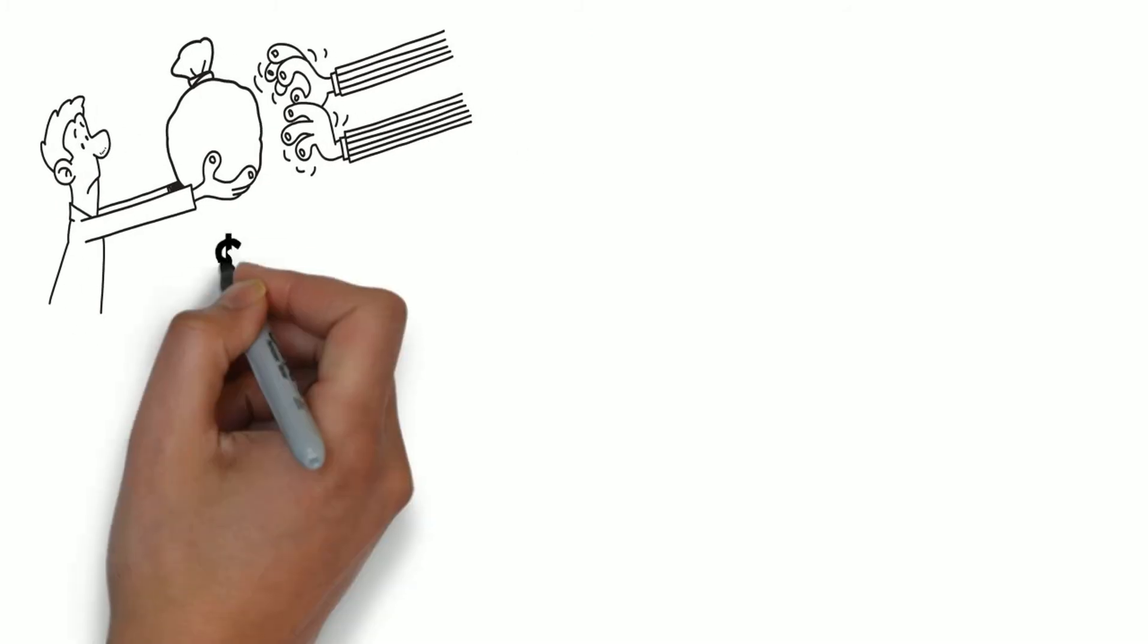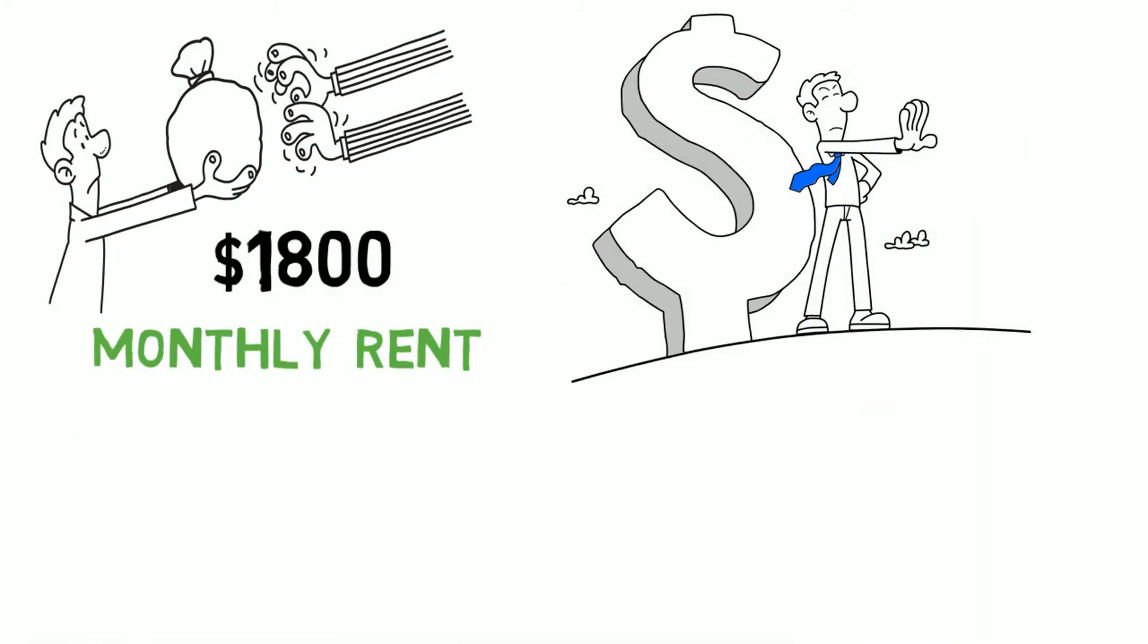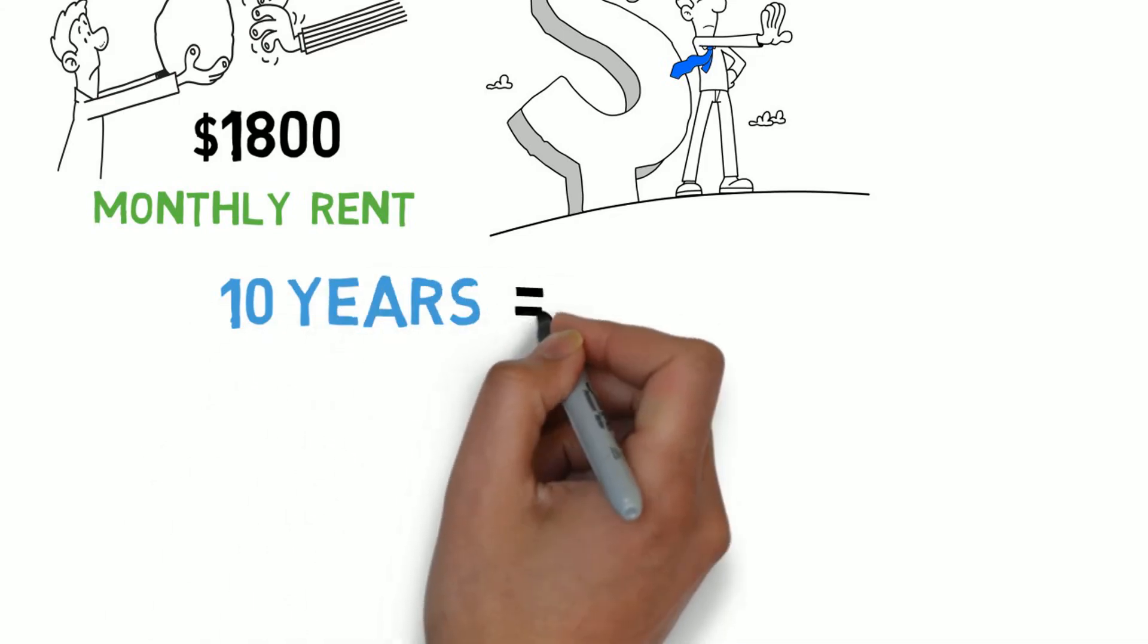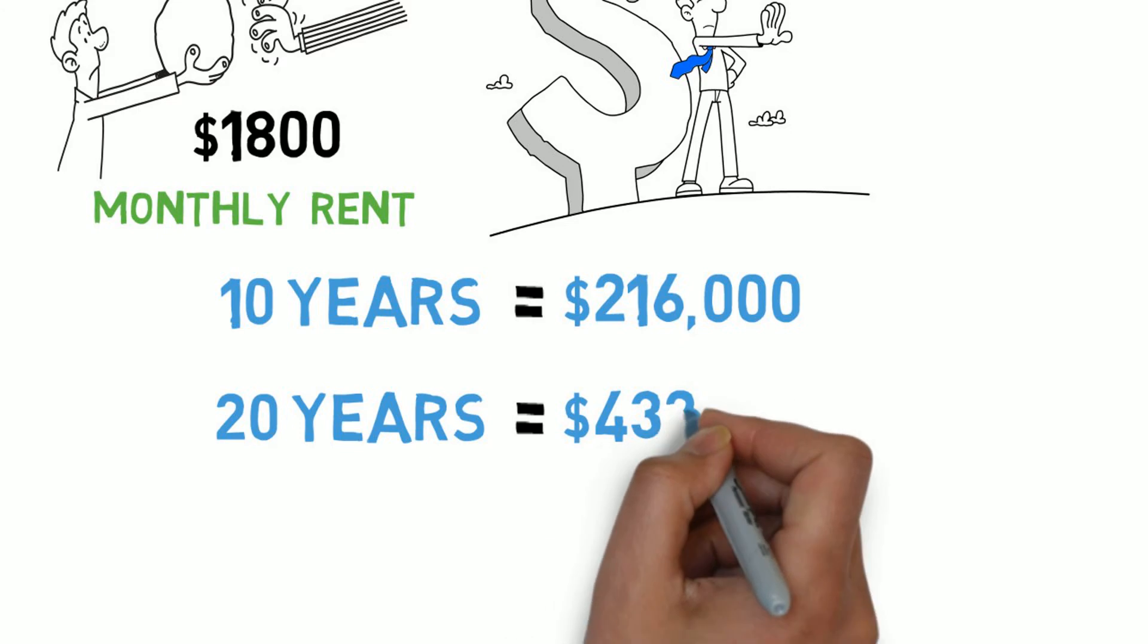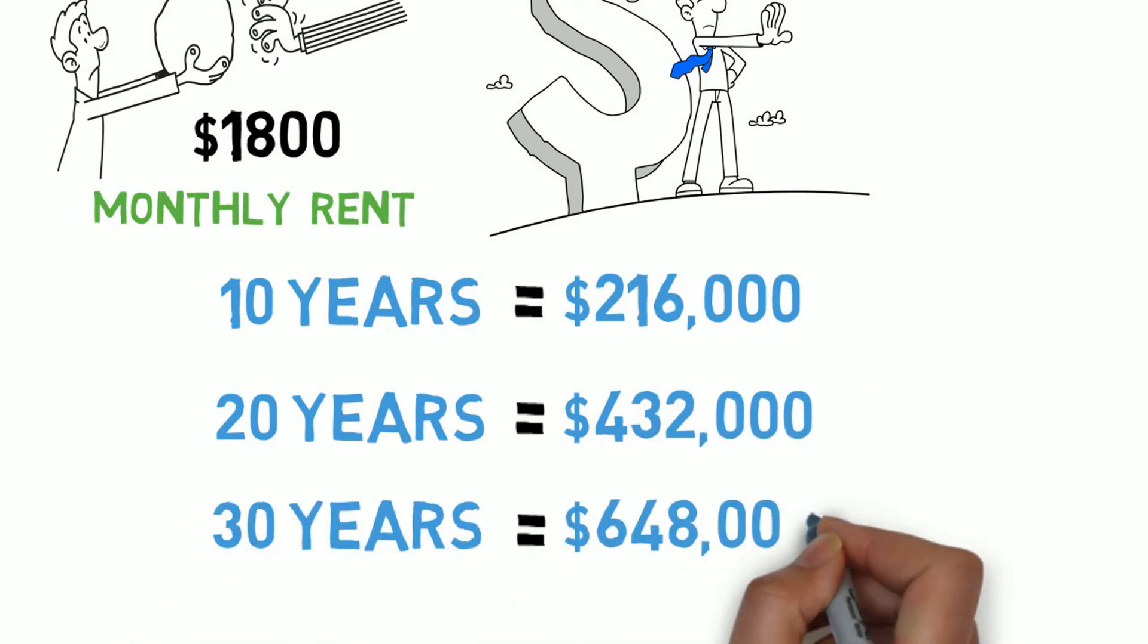If you are paying $1,800 a month in rent with no rent increase, this is what you will pay. 10 years, $216,000. 20 years, $432,000. 30 years, $648,000.